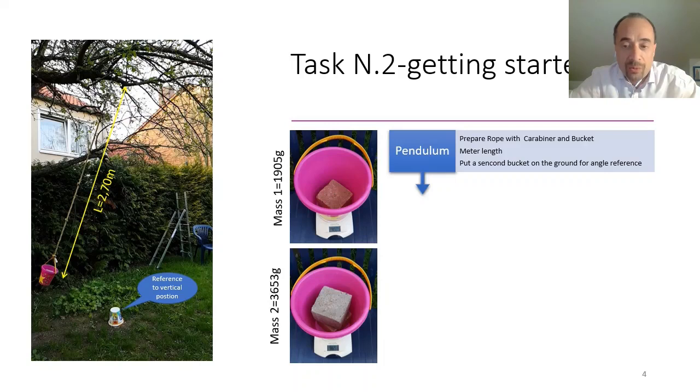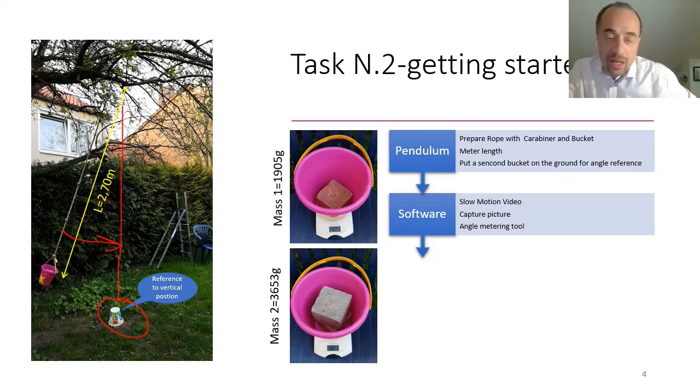We prepare the rope with the carabiner and the bucket. And then we put a second bucket here for reference of the vertical position because eventually we need to measure this angle. We need a software to get a slow motion picture of the swing. We need to capture the picture and to measure the angle.